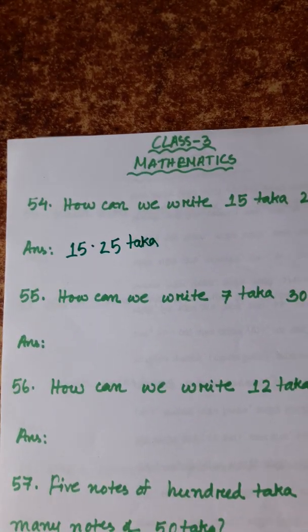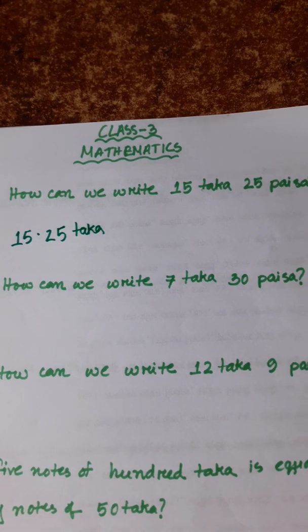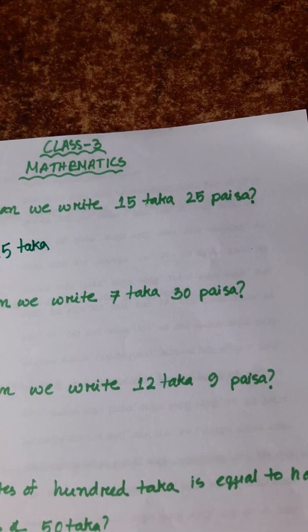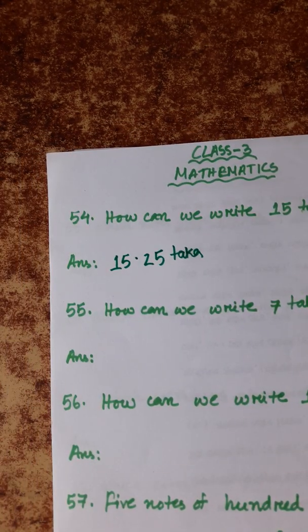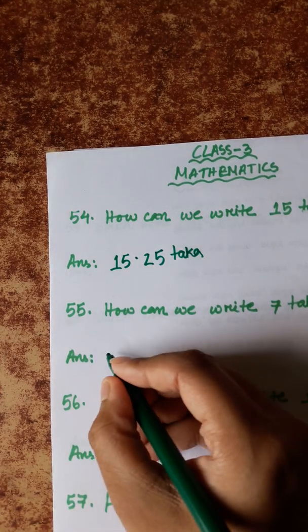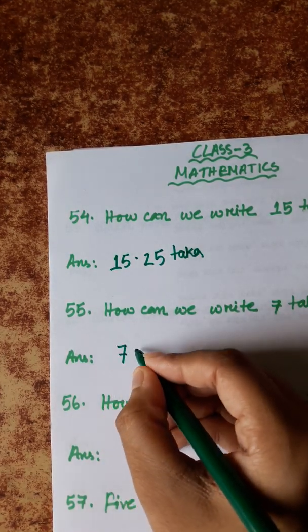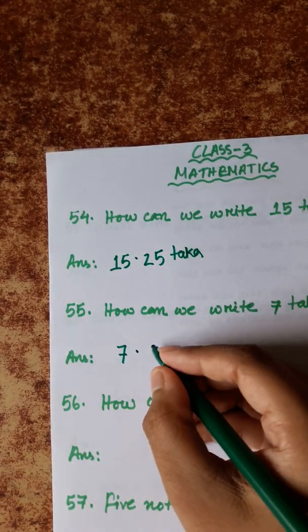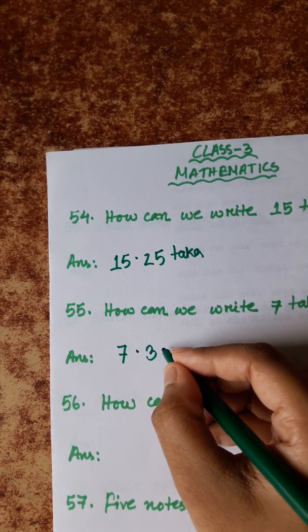Number 55: how can we write 7 over 30? We are going to write 7 over 30.